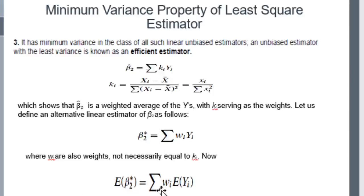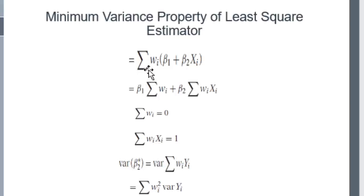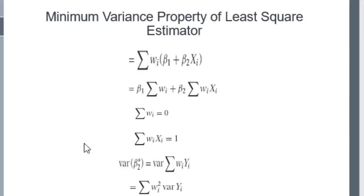The expected value of beta2-star equals sigma(wi * E(yi)). Replacing E(yi) = beta1 + beta2*xi, we get sigma(wi*(beta1 + beta2*xi)) = beta1*sigma(wi) + beta2*sigma(wi*xi). Applying the properties sigma(wi) = 0 and sigma(wi*xi) = 1, we obtain E(beta2-star) = beta2 — so beta2-star is also a linear unbiased estimator.